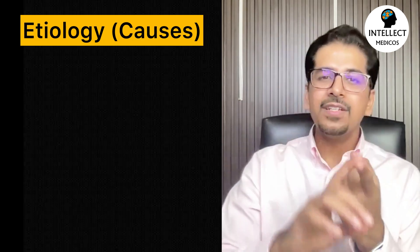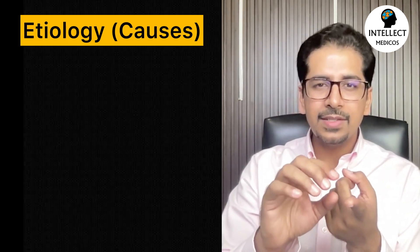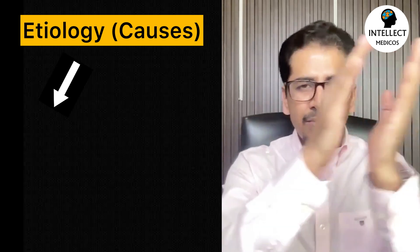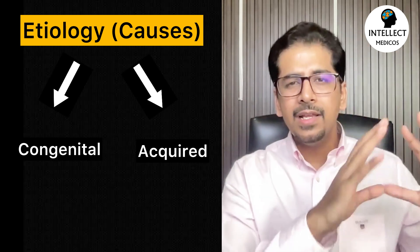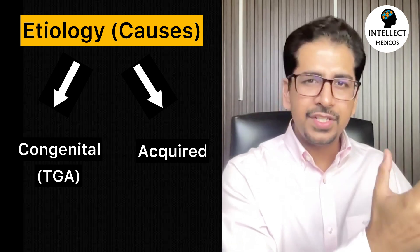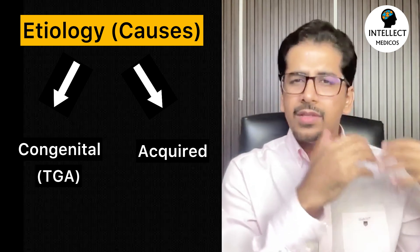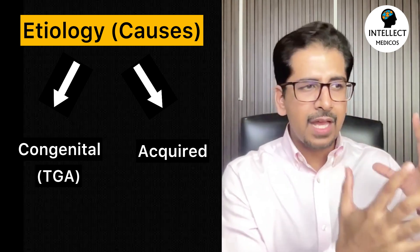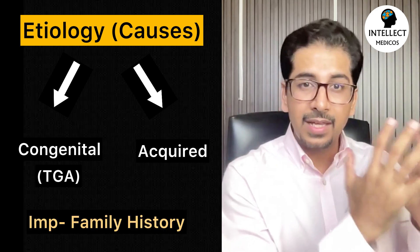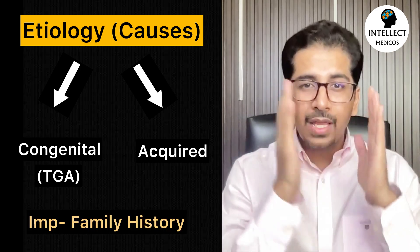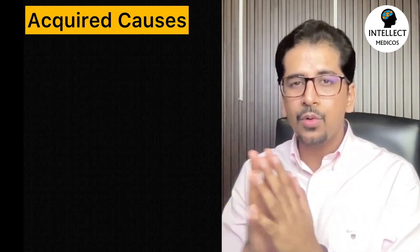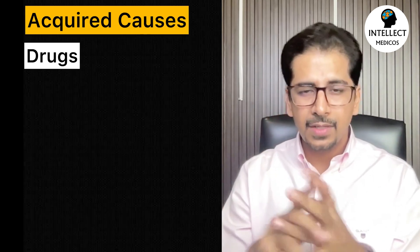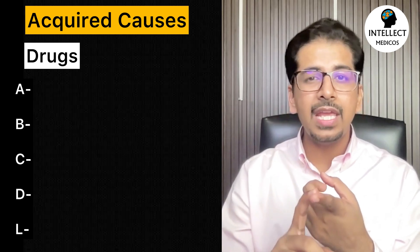If I talk about the etiology of heart blocks, categorize into congenital and acquired. Congenital — for example, a patient with TGA, transposition of great arteries — so you need to ask family history. For acquired causes, very important are drugs, which you can remember with the mnemonic ABCDL.